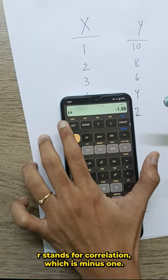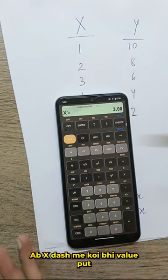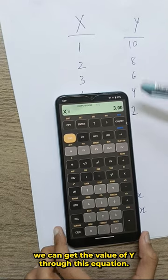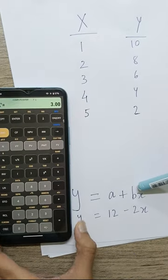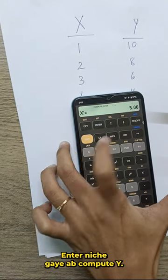So, r stands for correlation which is minus 1 in our case. Now, we can get the value of y through this equation. Let's take any number. For example, let's take 5.